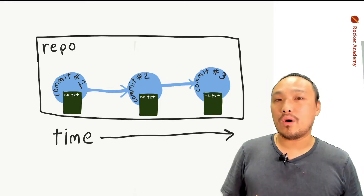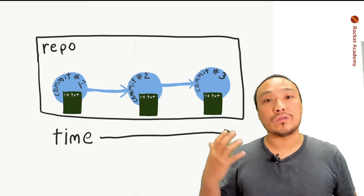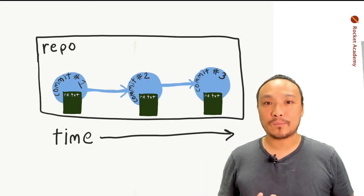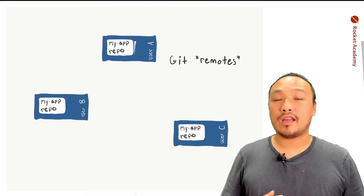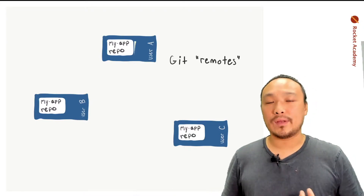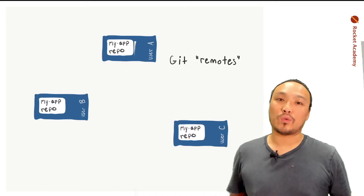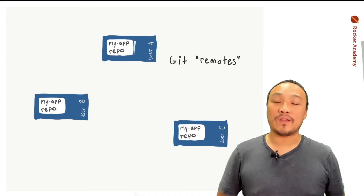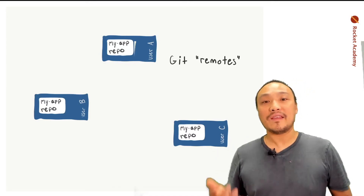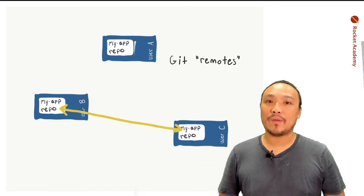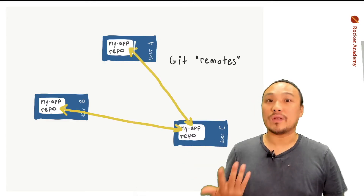Everything that we already know about a repo on a single computer still holds true, but we're going to be talking about these repos in several different places. In Git, one project repository that's on a user's computer is called a remote, and these remotes can be connected together depending on which user wants to collaborate with which user.